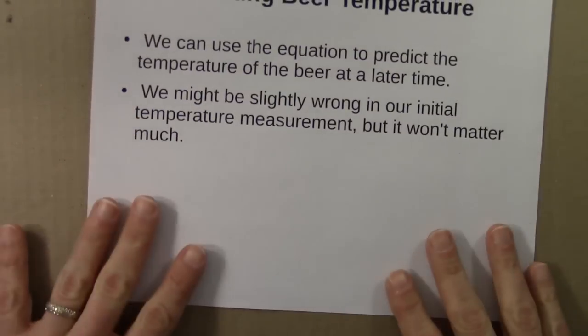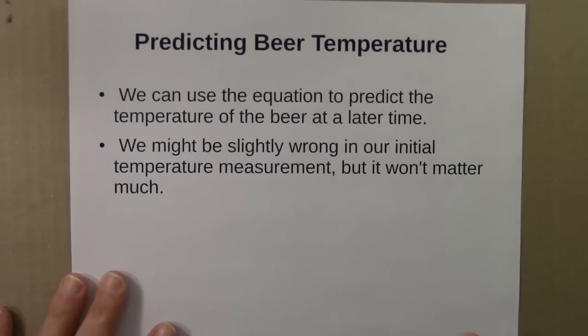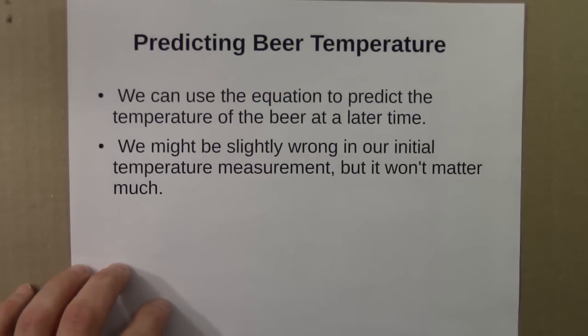As we did with the logistic equation, we can think about this differently. We can think about using the equation to make predictions. If I know the temperature of the beer now, I can use this equation to make a prediction for the temperature at a later time. We might be slightly wrong in our initial temperature measurement, but that difference won't matter much.